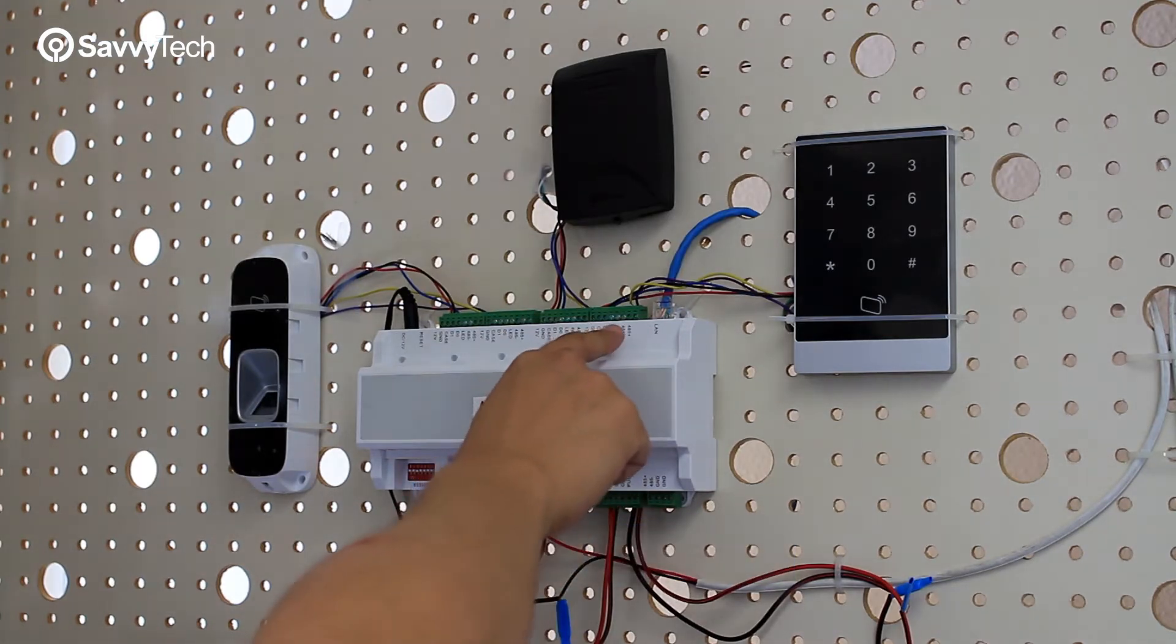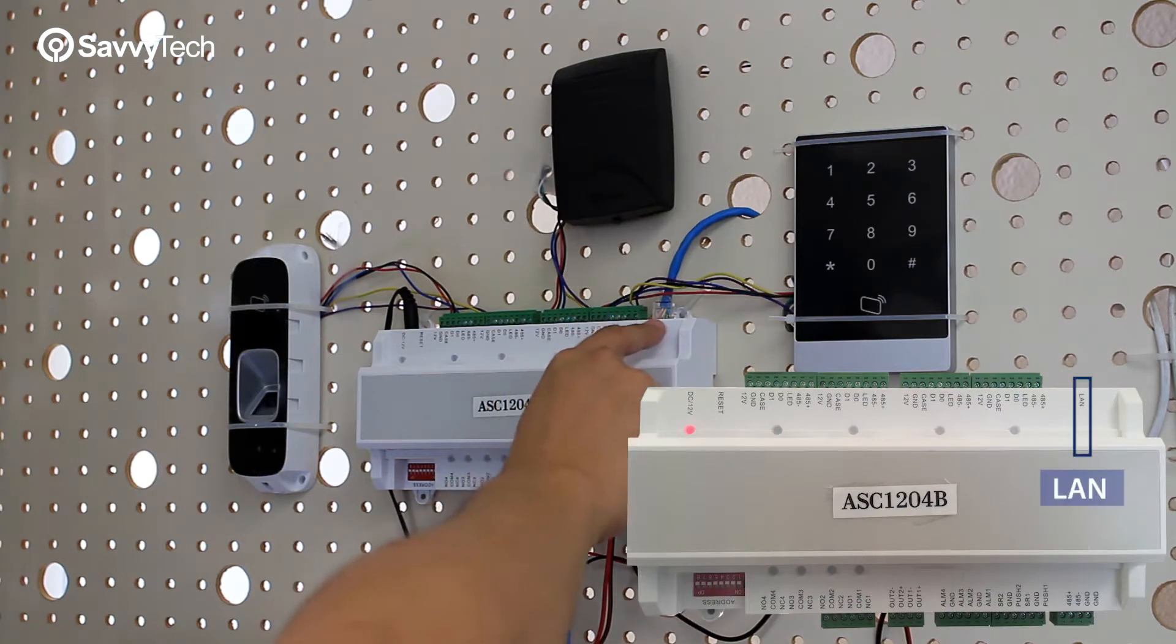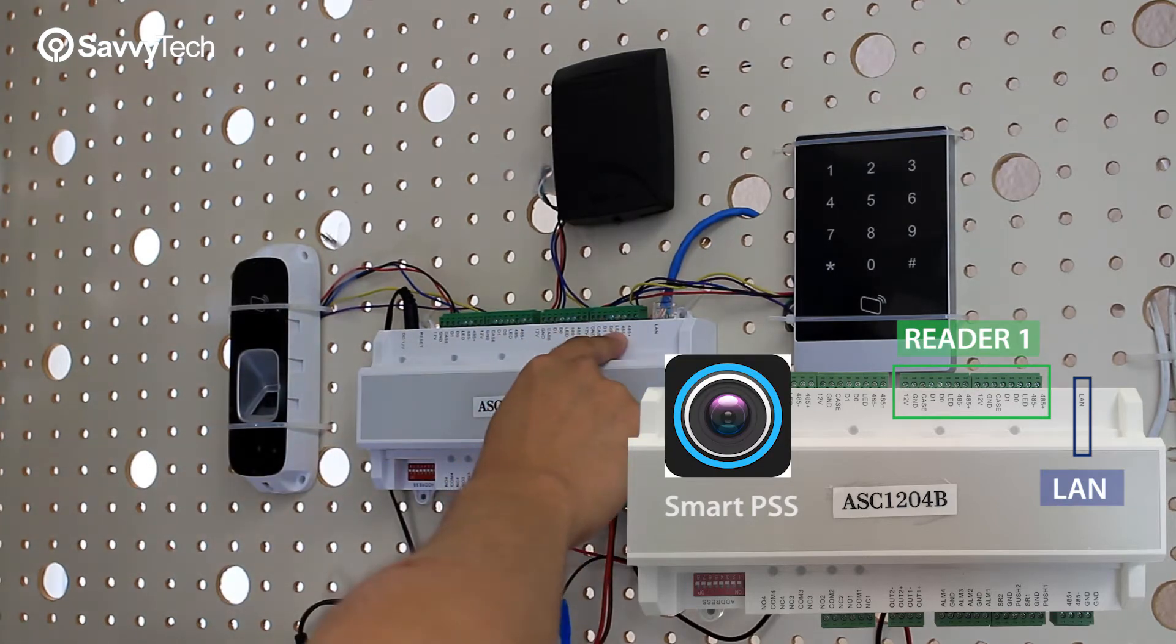As you can see here, there's different green terminal blocks. The one that's closest to the LAN port is actually known as Reader 1. So when you connect your readers and you program it into the SmartPSS, just keep that in mind, the order that you connected the readers to.